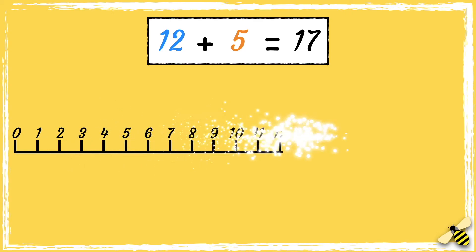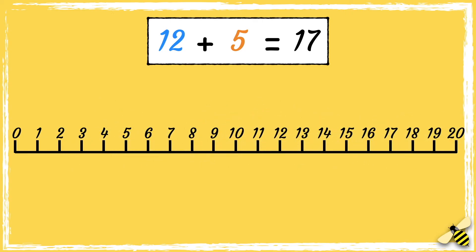For the next method, we'll use a number line to count on. We start from 12, and because we add 5, we need to jump 5 digits to the right: 1, 2, 3, 4, 5. I've landed on 17.